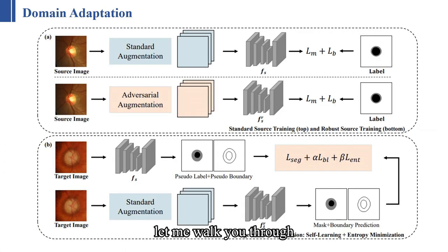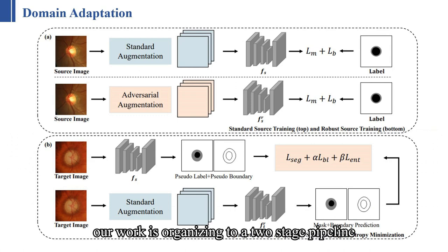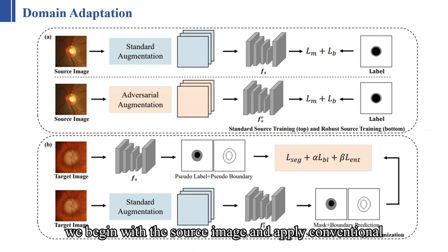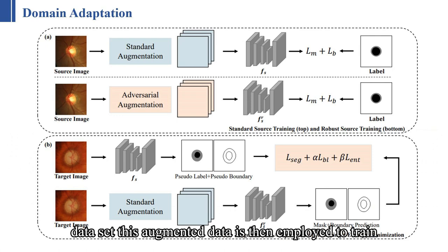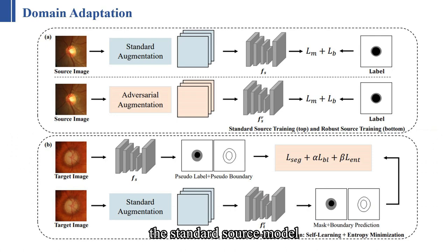Let me walk you through the overall framework of our research. Our work is organized into a two-stage pipeline. In the first source training stage, you will observe that there are in fact two distinct training phases. We begin with the source image and apply conventional data augmentation techniques such as cropping, rotation, and the injection of random noise to enhance our dataset. This augmented data is employed to train the standard source model using a combined loss function, denoted as L equals Lm plus Lb.